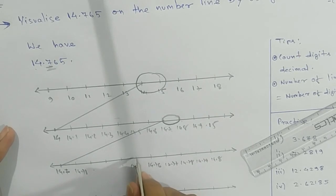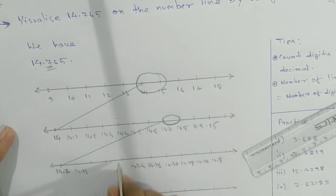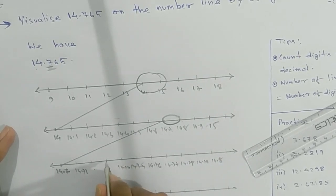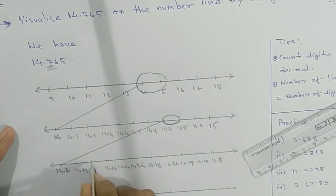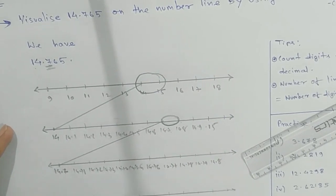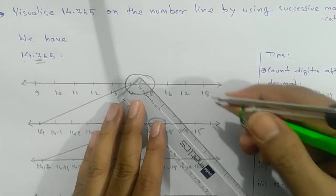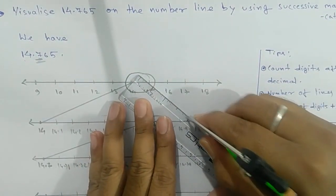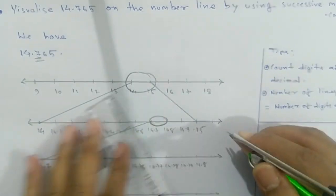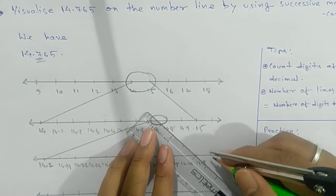You have to write all of these. Now magnify here. Join them. This part you have to join. You are magnifying this part, joining the endpoints.